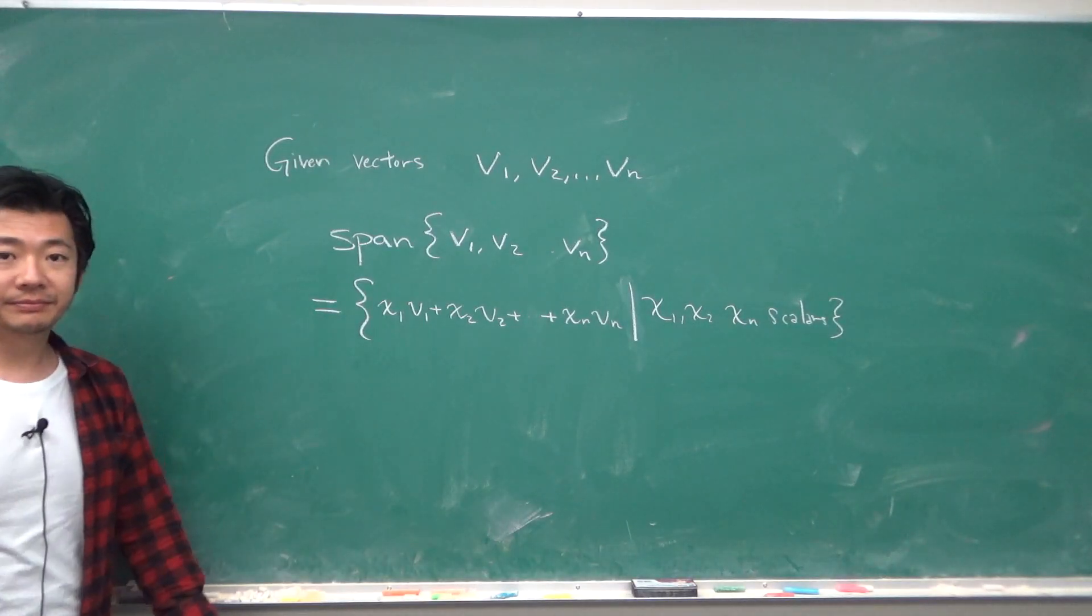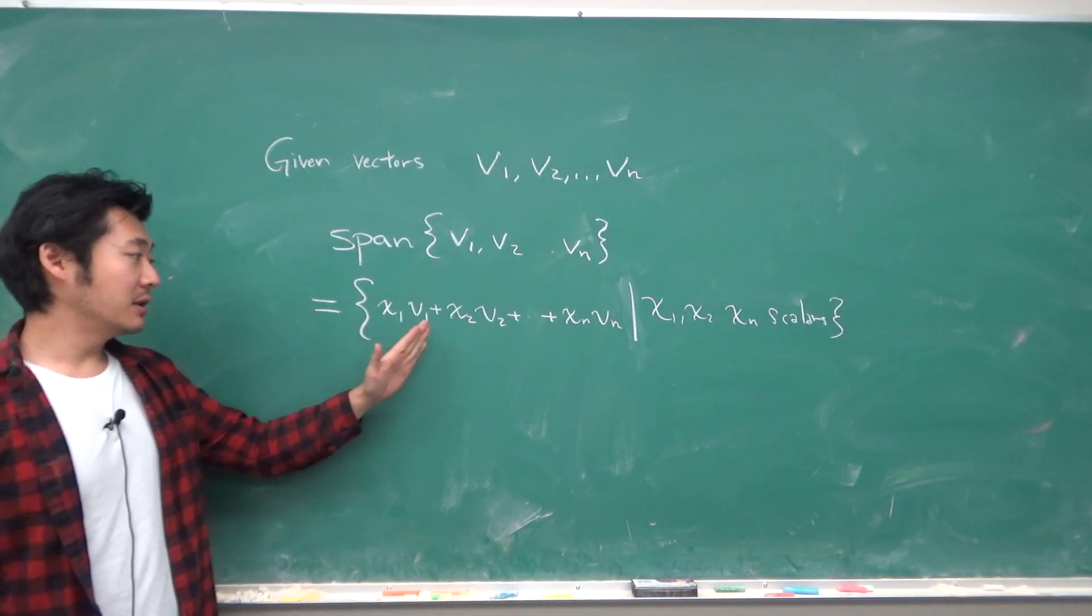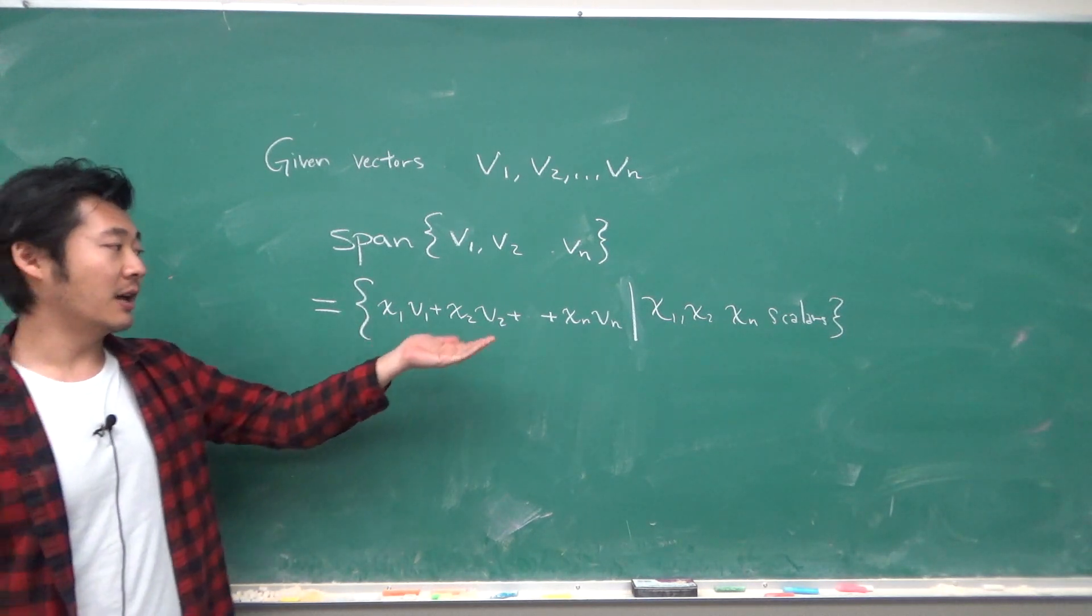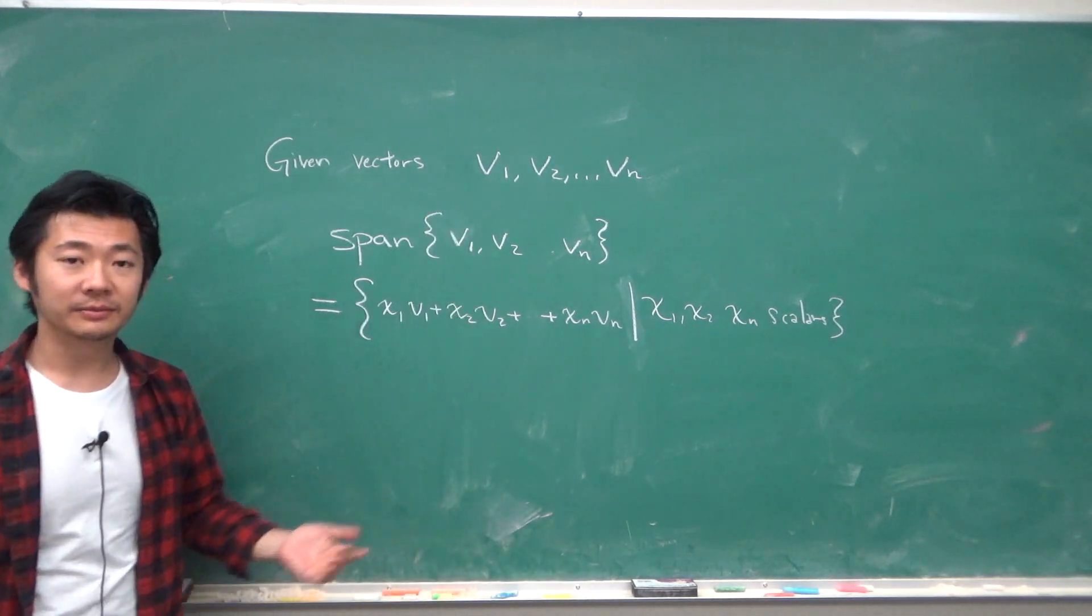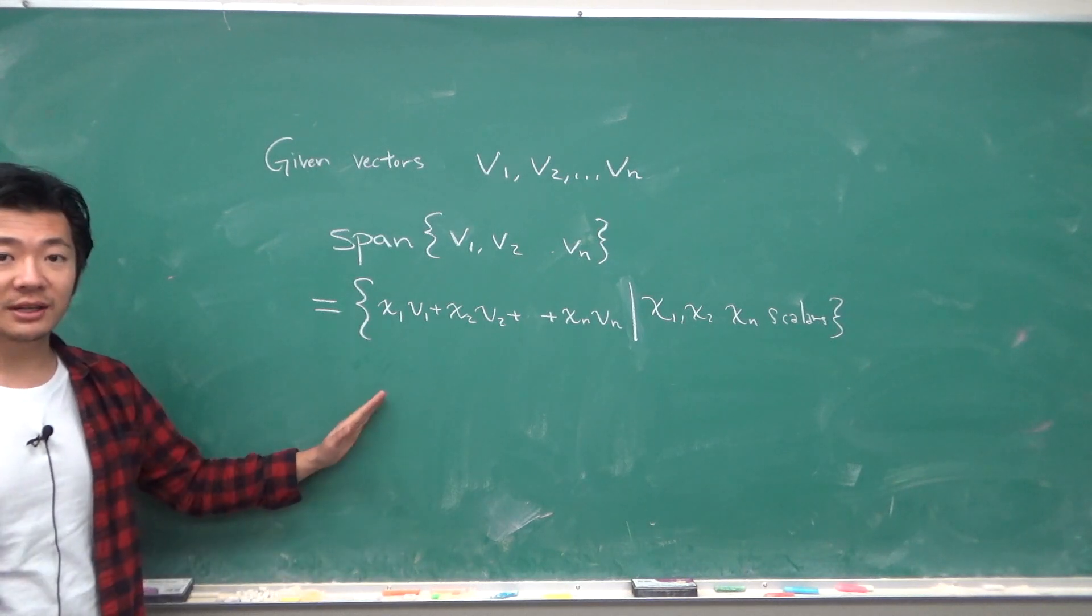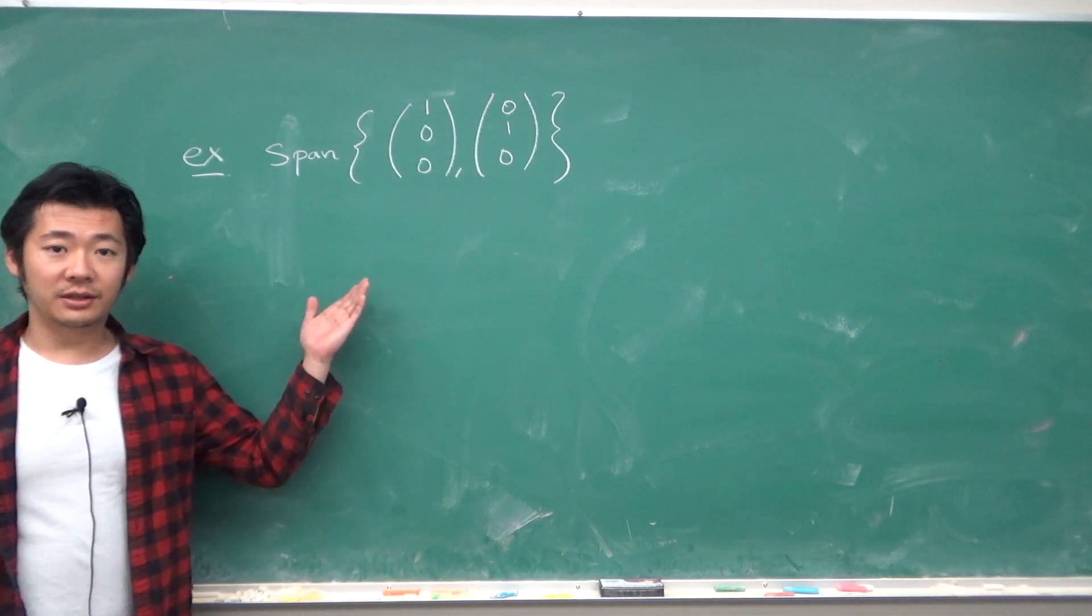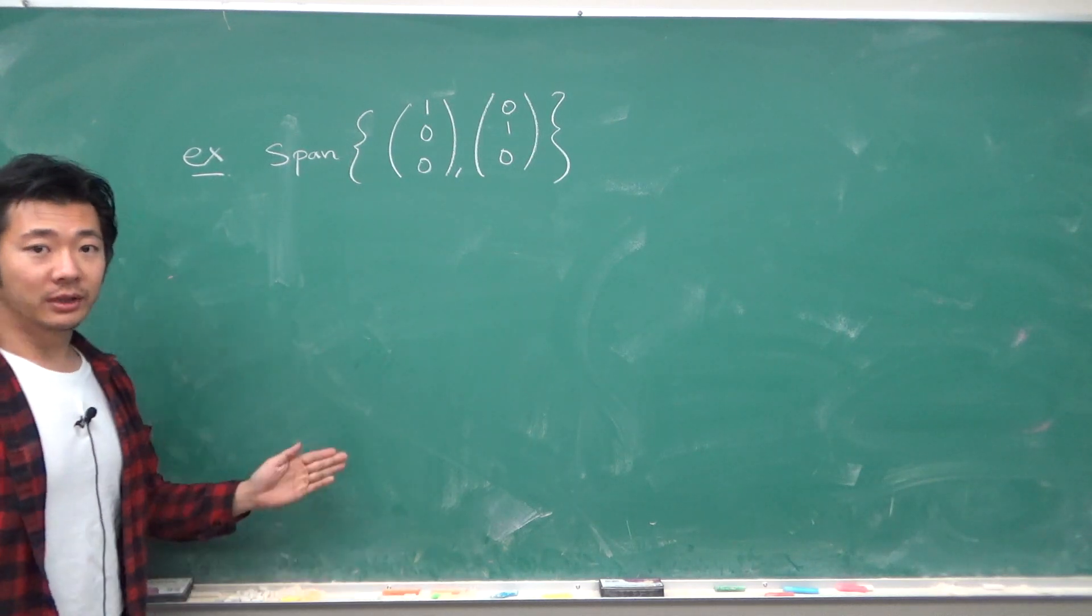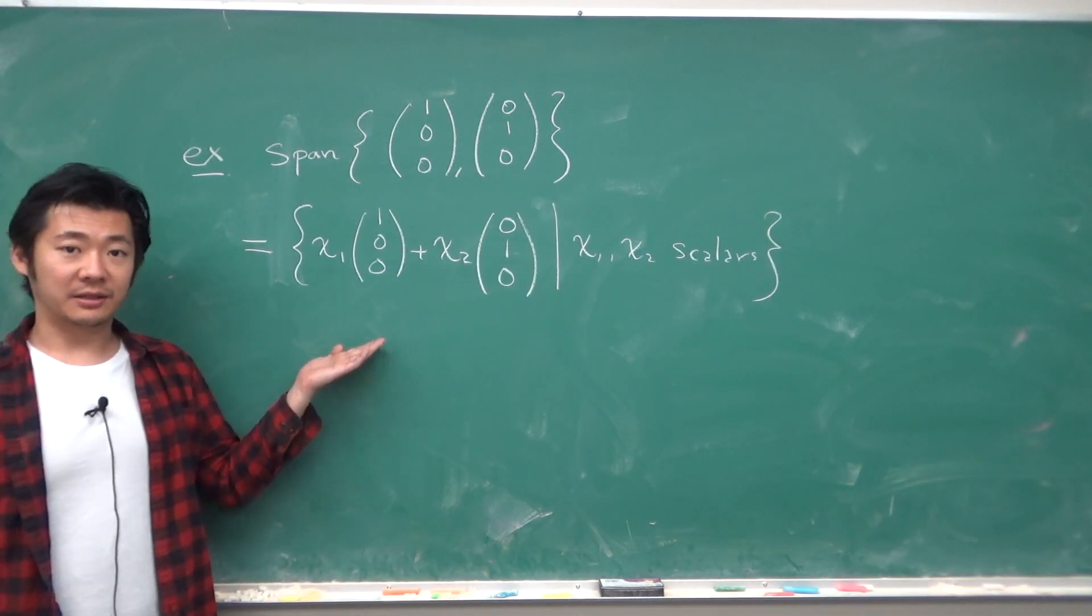So something like this, where x1 to xn are scalars and v1 to vn are these fixed vectors. So to give a more concrete example, let's consider the span of these two vectors. What set does it form? Well, if we write it out, then we get something like this,